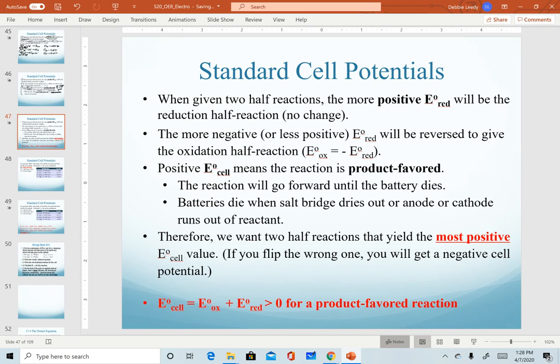So the net result of all of our discussion so far is that when I give you two half reactions, you want the combination of half reactions that will give the most positive overall standard cell potential. If you flip the wrong equation, you will get a negative cell potential. So easy way to fix it: flip them both and you get a positive cell potential. Remember our equation—our calculation for the standard cell potential is adding the oxidation potential to the reduction potential. And as long as that's a positive value, we have a product favored reaction.